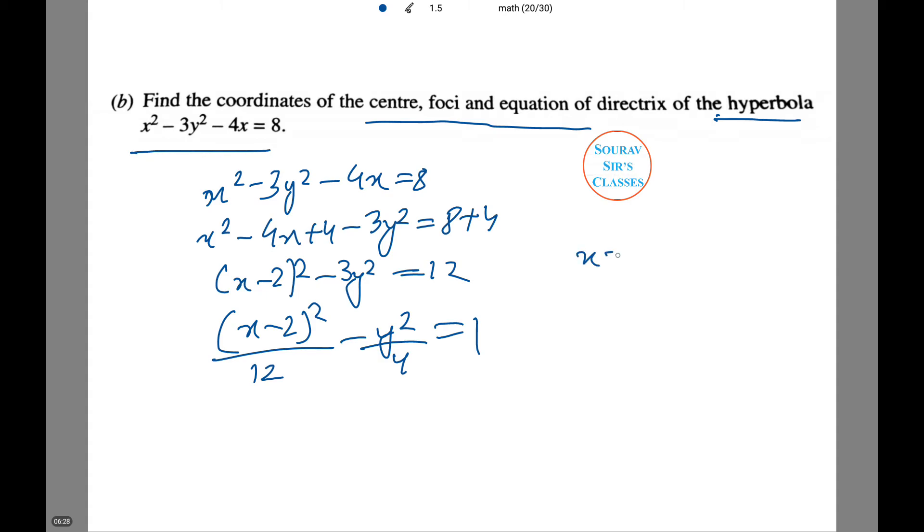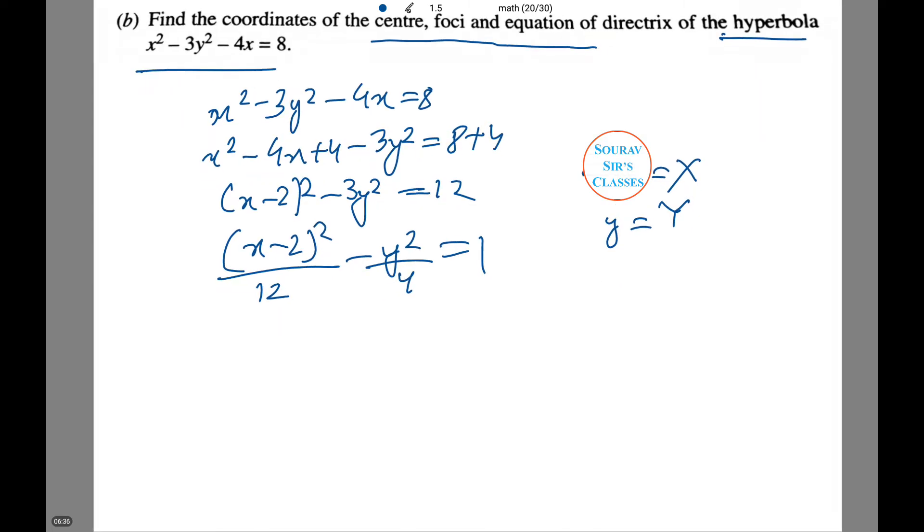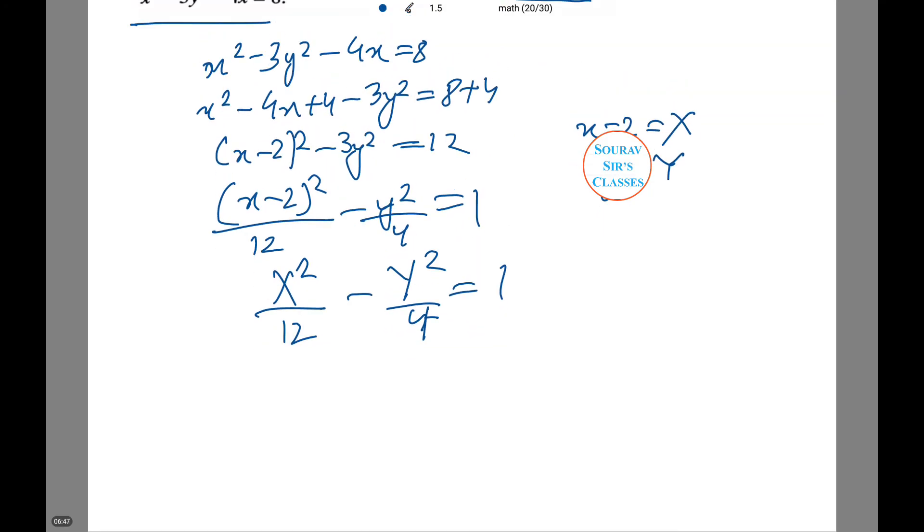Now writing x minus 2 equals capital X and small y as capital Y, the given equation becomes X squared by 12 minus Y squared by 4 equals 1. Here a squared equals 12, b squared equals 4, or a equals 2 root 3, b equals 2.